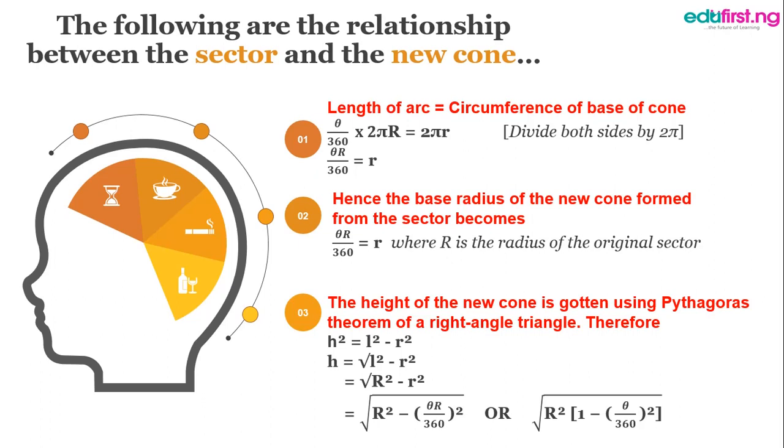In mathematical terms, that is theta over 360 multiplied by 2πR, which is the length of arc, equal to 2πr. So, by the time we cancel out 2π on both sides of the equation, we're going to be left with theta R over 360 on the left hand side equals r.